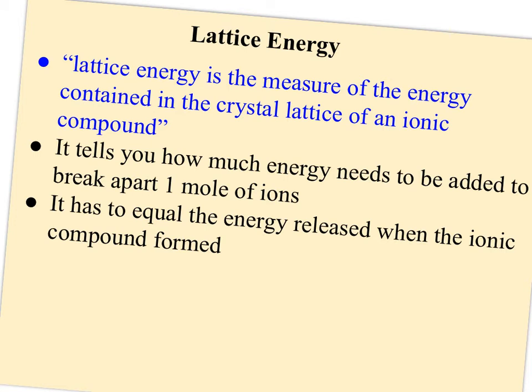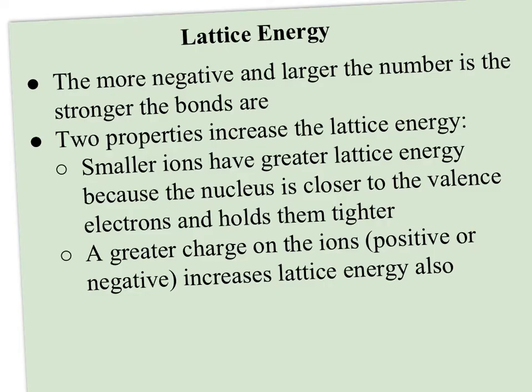So back to lattice energy. Lattice energy is the measure of the energy contained in the crystal lattice, or how much energy needs to be added to break apart a mole of ions. It has to equal the energy that was released when the ionic compound forms — however much energy is given off when it forms is how much energy you have to put back in to take it apart. The more negative and larger the number is for lattice energy, the stronger the bonds are. A large negative number means a strong bond. Two things will make that number bigger: smaller ions (because the nucleus is closer to the valence electrons), and a bigger charge on the ions — like a bigger magnet.